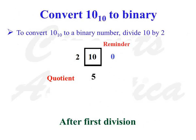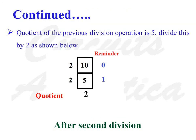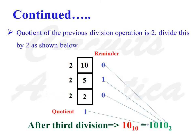Convert 10 to binary. To convert 10 to a binary number, divide 10 by 2. We get a quotient of 5 and a remainder of 0. As the quotient is not less than 2, we divide again. When we divide 5 by 2, we get 2 as the quotient and 1 as the remainder. As the quotient is still not less than 2, we continue for a third division. When we divide 2 by 2, we get 1 as the quotient and 0 as the remainder. As the quotient is less than 2, the conversion is complete. The decimal number 10 is equal to 1010 in binary format.